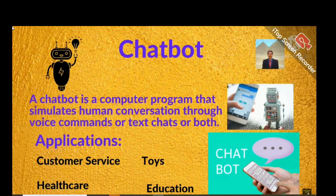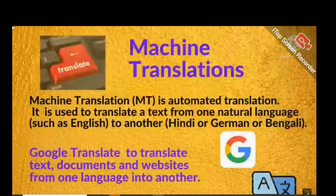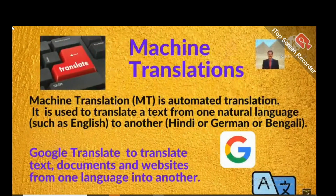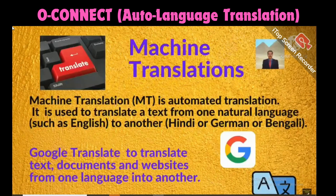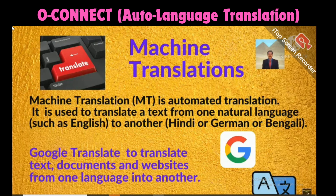Machine translation — what is machine translation? It translates text from one language, such as English, to another — Hindi, German, Bengali, or whatever language you want. This is automated translation. The best example is Google Translate, which translates text, documents, and websites from one language to another.